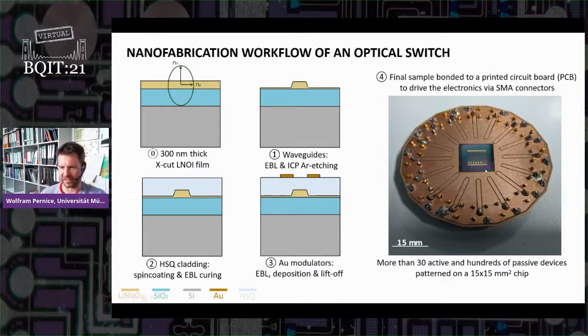So basically we etch it down into these ridge structures. They have a slight angle given by the reactive ion process. We cover them with an oxide layer so that we can realize electronic crossings for contacts, both for modulators but also for the detectors later. And then we integrate everything in a chip scale platform and integrate it with a PCB. Our typical chip size is about 15 by 15 millimeters. There you can fit a few hundred devices that you can then characterize and measure with standard electronics.